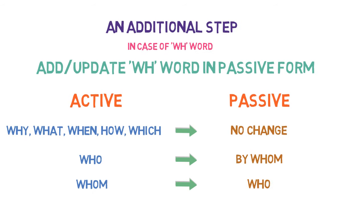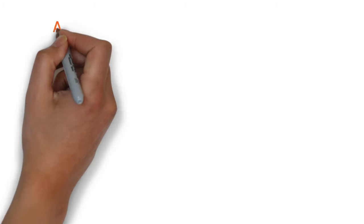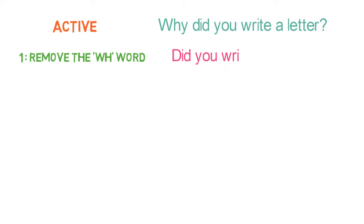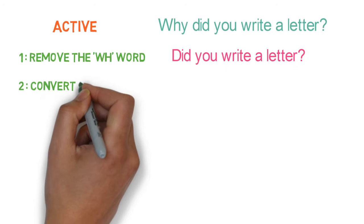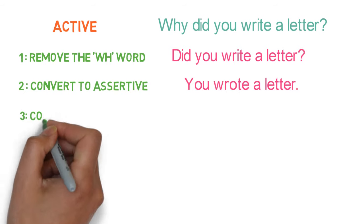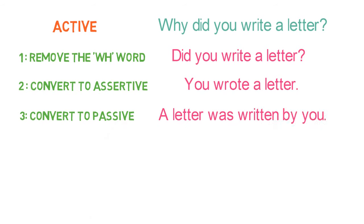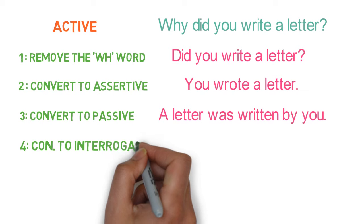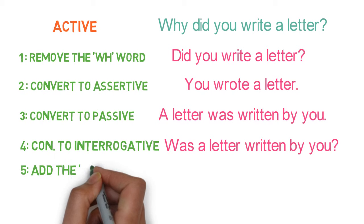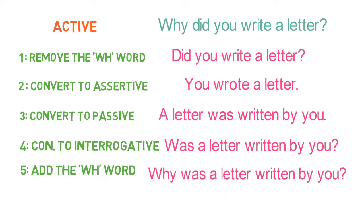Please note these are general rules and there may be exceptions. Now let's look into sentences where the WH word doesn't change in passive form. Example 1: 'Why did you write a letter?' Step 1: Remove the WH word — 'Did you write a letter?' Step 2: Convert interrogative to assertive — 'You wrote a letter.' Step 3: Convert to passive form — 'A letter was written by you.' Step 4: Convert assertive to interrogative — 'Was a letter written by you?' Step 5: Add the WH word again — 'Why was a letter written by you?' That is the final sentence in passive form.